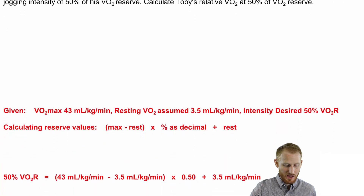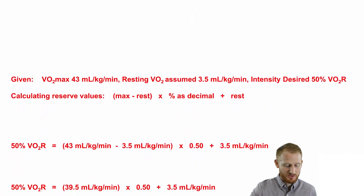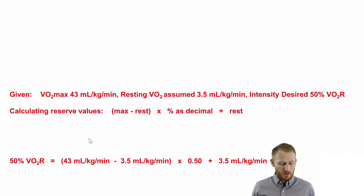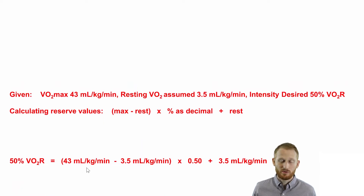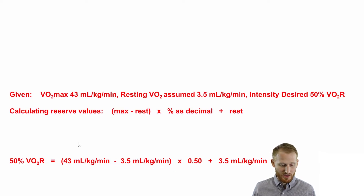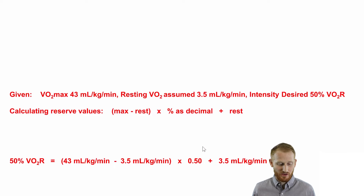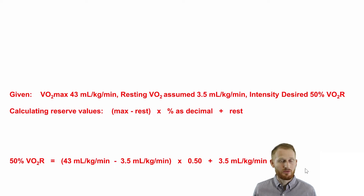Let's go ahead and start plugging in some values. So 50% of VO2 reserve equals 43 mL/kg/min minus his resting VO2 of 3.5, then multiply that by 0.50 — because 0.50 is the decimal format for 50% — and then add back in the 3.5.